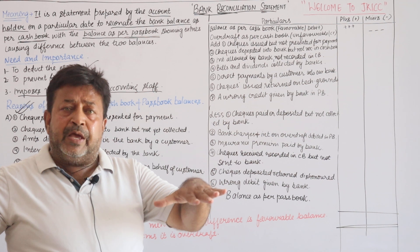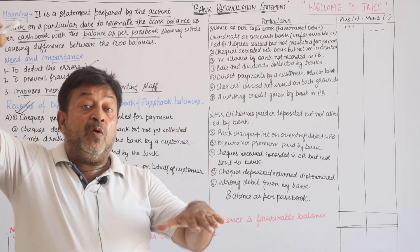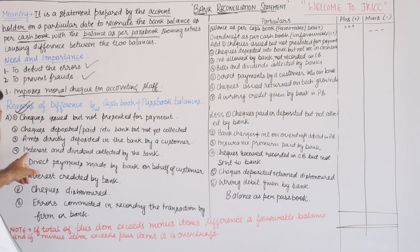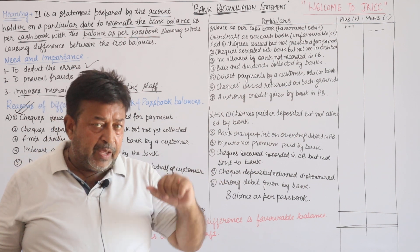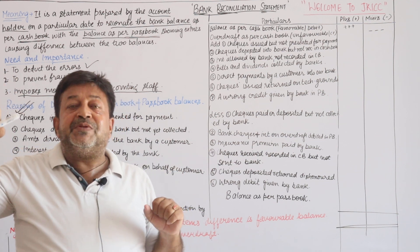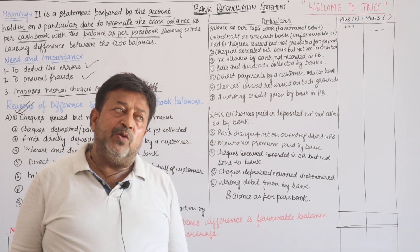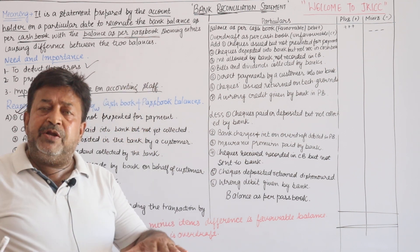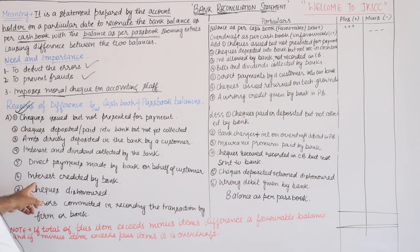Third reason: amounts directly deposited in the bank by a customer. A customer has directly paid money into my bank account, so the pass book balance has increased, but my cash book balance is lower — so there is a difference. Fourth reason: interest and dividends collected by the bank. If we have money in the bank, the bank will give interest. The pass book balance increases but we don't know how much interest until we see the pass book.